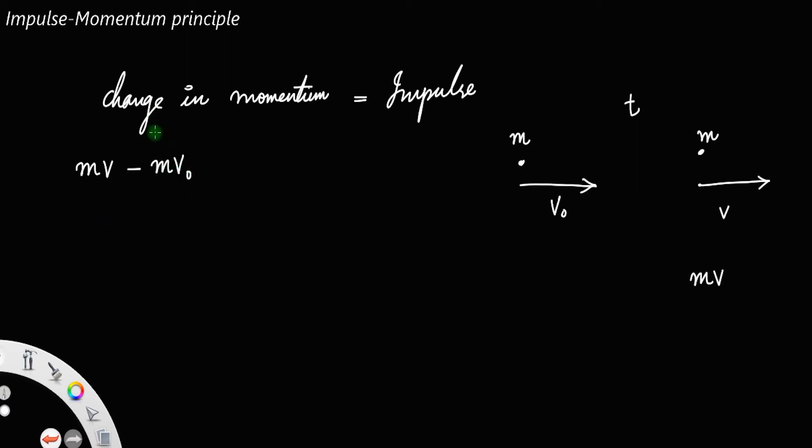Change in momentum is equal to m times final momentum minus initial momentum. If you take this m outside, since it is common, you will get v minus v0. From the first, let us call this equation as equation number 1.